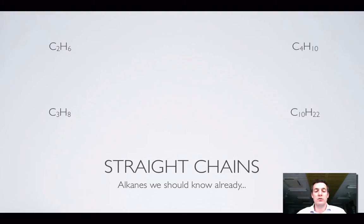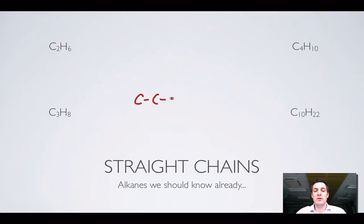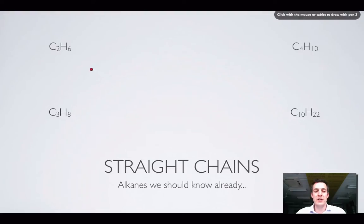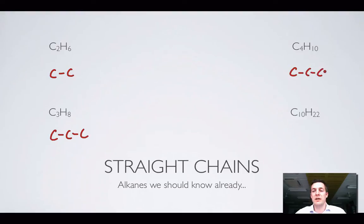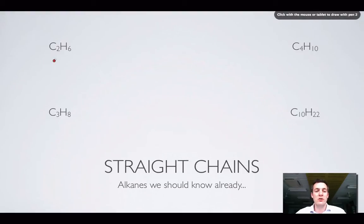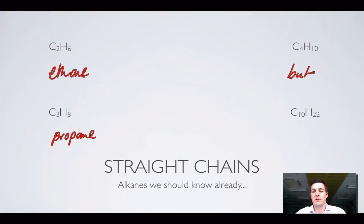Let's start by looking at what we already know — straight chain alkanes. When I say a straight chain, I mean all the carbons form one continuous chain with no branches. With two carbons it's ethane, three is propane, four is butane, and ten is decane. The names will change if the chains aren't straight, but straight chain alkanes we already know how to name.